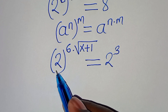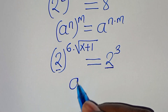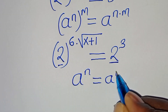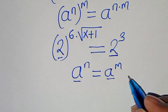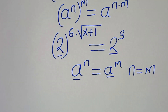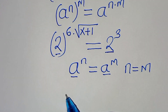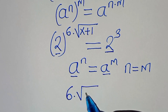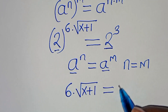Now, since the bases are common here — that is, a to the power of n equals a to the power of m — then this means exponent n is equal to m. Applying this property, we have 6 multiplied by square root of x plus 1, this is equal to 3.